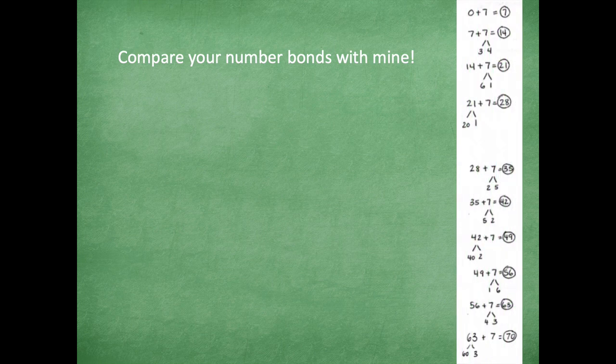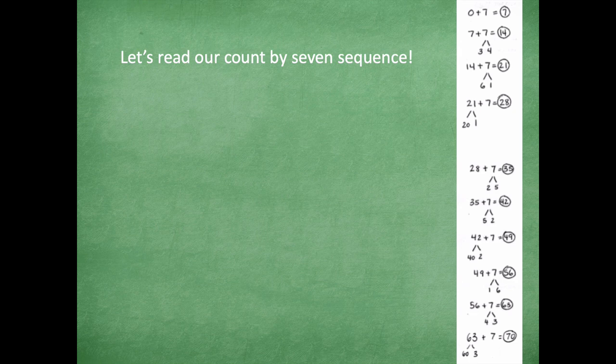All right, so compare your number bonds with mine. So here's my work that I came up with. Okay, so I modeled all the way to 70. Now remember, it's okay if you didn't get to 70, we can still use this example to help us. Okay, so let's read our count by this, by seven sequence. So that's just counting by sevens, that's a fancy way of saying it.